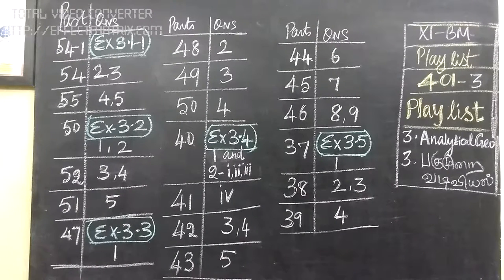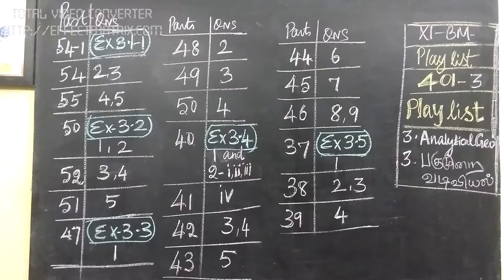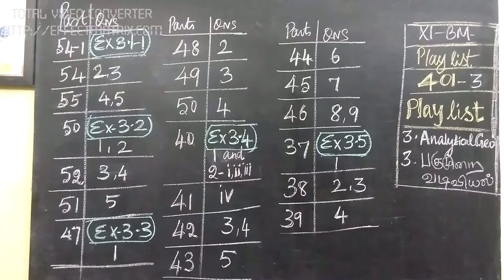Now we see the playlist for Business Maths 11th Standard Chapter 3, Analytical Geometry. Given Exercise 3.1 questions 1, 2, 3, 4, 5 and Exercise 3.2 questions 1, 2, 3, 4, 5.